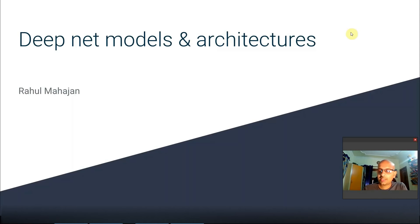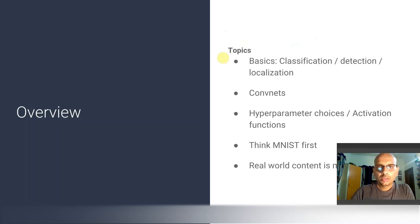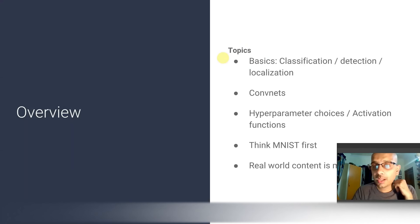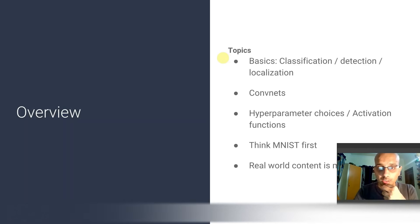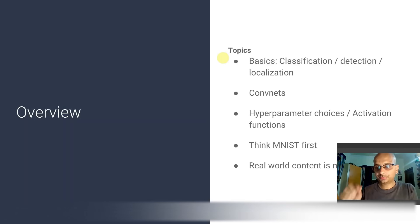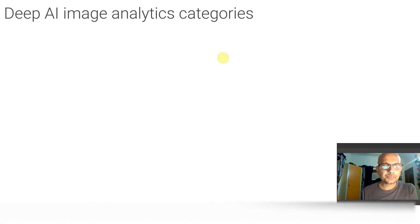Let's get started. In the next few minutes, we'll talk about different kinds of image analysis categories, go deeper into convolutional neural nets, cover different hyperparameters and the choices we have, go a little deep into MNIST because that's where some fundamentals become clear, and we'll also talk about a real-world network architecture — AlexNet.